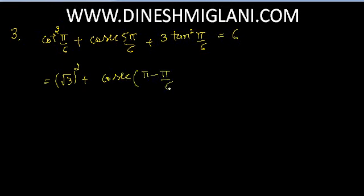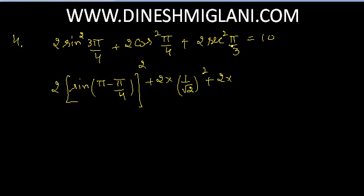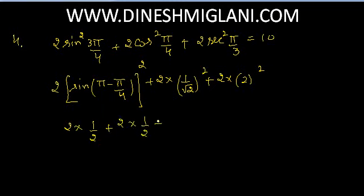2 × sin(pi − pi/4)² + 2 × (cos pi/4)² + 2 × (sec pi/3)². In the second quadrant sin is positive, so sin(pi/4) = 1/√2. cos 45° = 1/√2, and sec 60° = 2. So 2 × (1/√2)² + 2 × (1/√2)² + 2 × 4 = 2 × 1/2 + 2 × 1/2 + 8 = 1 + 1 + 8 = 10. Hence the value is 10.